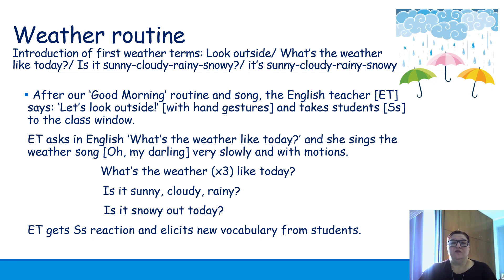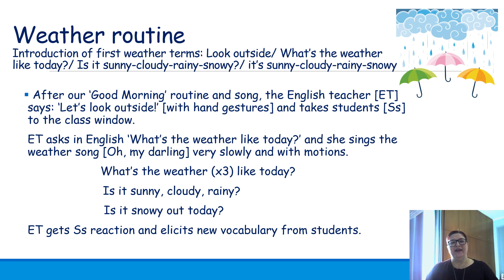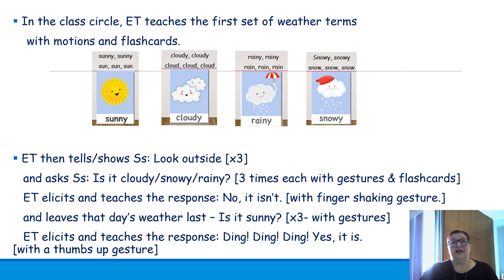The teacher would sing the weather song, which is basically the melody of 'Oh My Darling', very slowly and with motions so that the students will understand what the teacher is trying to show them. For example: 'What's the weather? What's the weather? What's the weather like today? Is it sunny, cloudy, rainy? Is it snowy out today?' Then the teacher would elicit the new vocabulary from the students and go to the class circle again.